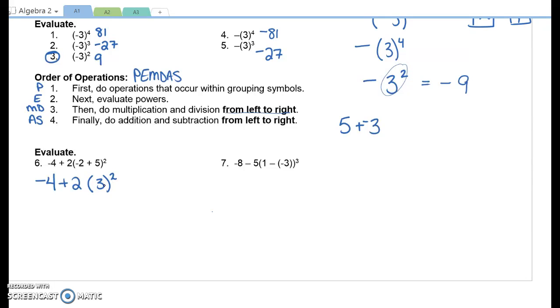What would we do next? We've done the parentheses, so next we do the exponent. So negative four plus two times nine. Next we do multiplication or division from left to right. Two times nine is 18. And then lastly, do the addition to get your final answer of 14.